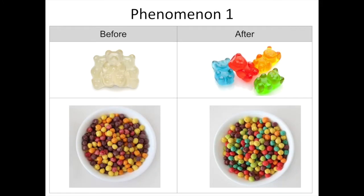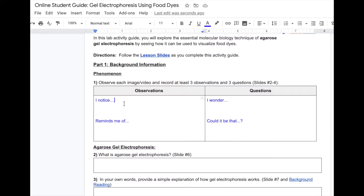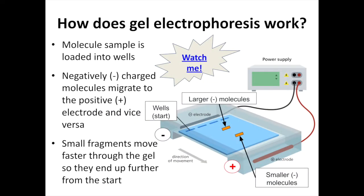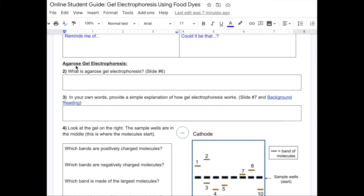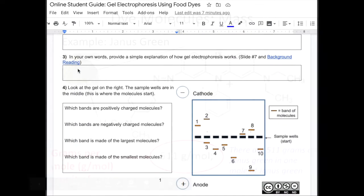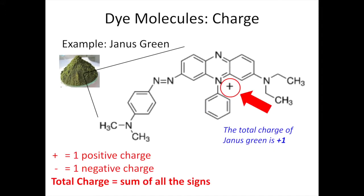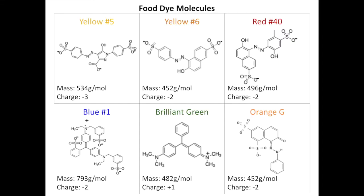Students begin by viewing a few different phenomena and then recording their observations and questions in their student guide. Next, they'll learn about and then record the basics of agarose gel electrophoresis. After exploring how each food dye molecule has a specific mass, charge, and structure,